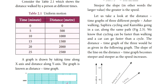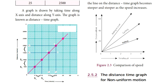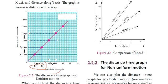Consider a body traveling 500 meters in the first 5 minutes, and 500 meters in the next 5 minutes. Equal distance is covered in equal intervals of time — that is uniform motion. The ratio s2 minus s1 by t2 minus t1 equals a constant. This gives us a uniform motion graph of distance versus time.